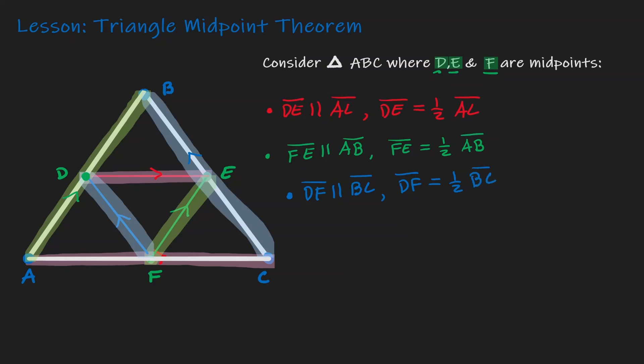So in conclusion, any time that we connect midpoints, there's going to be two properties that always occur. The first one is that it's going to be parallel to its opposite side. And second is that it's always going to be half the length of the opposite side.